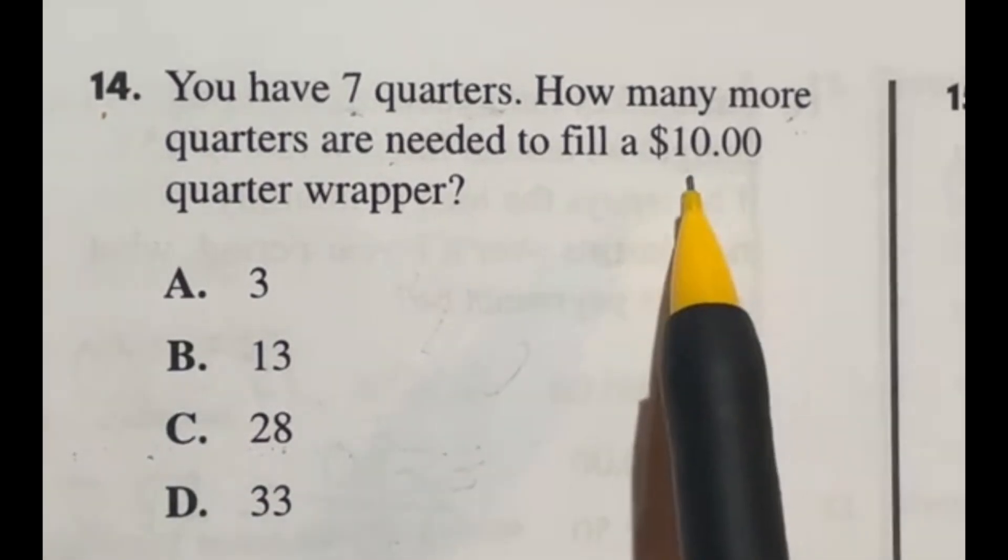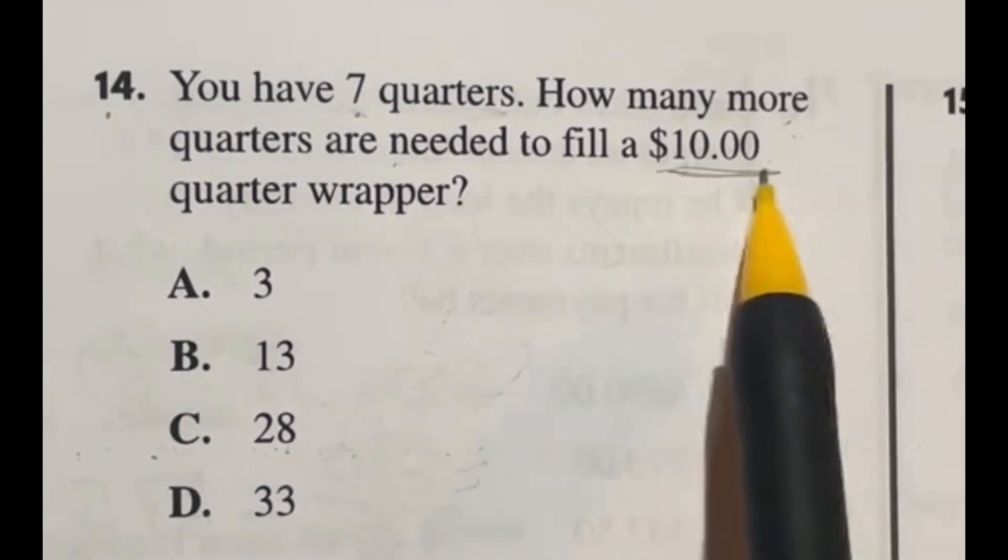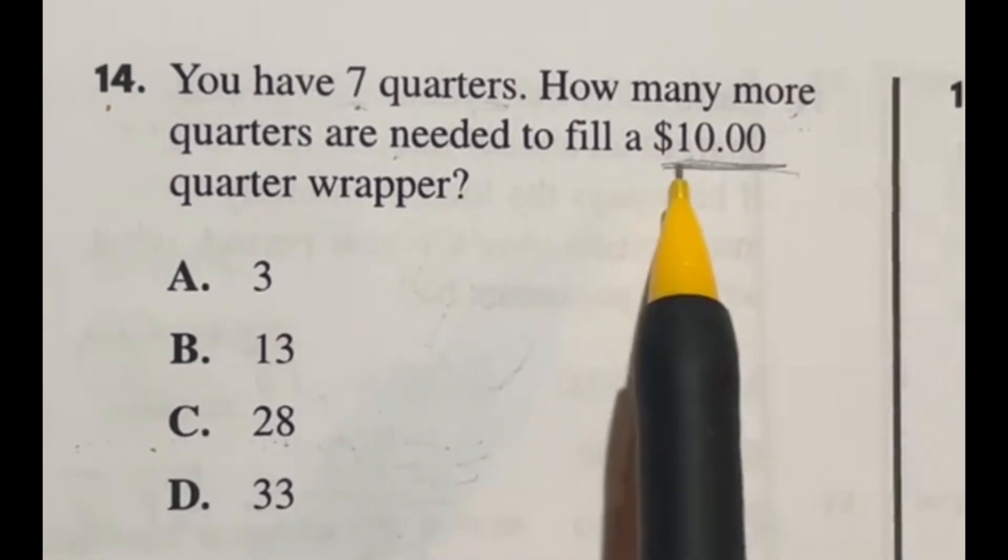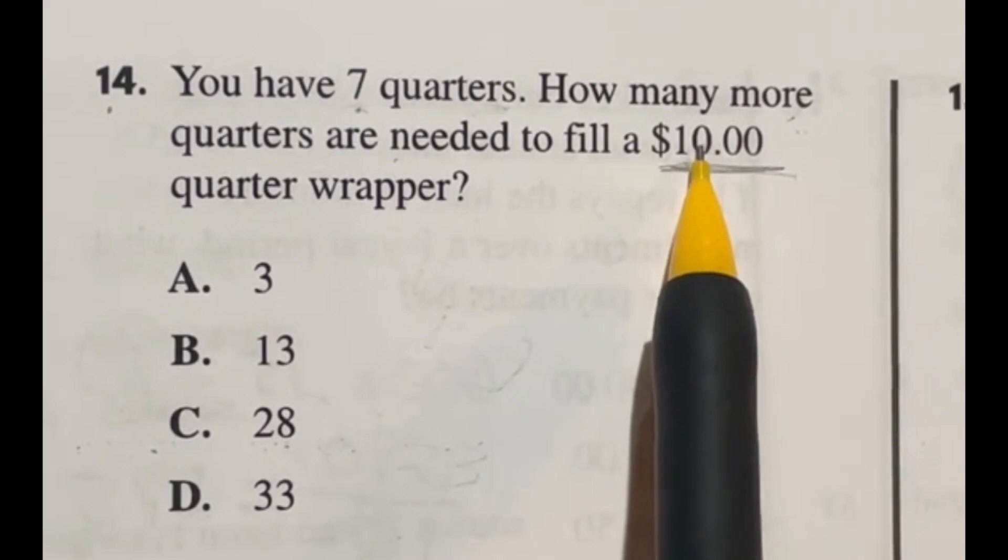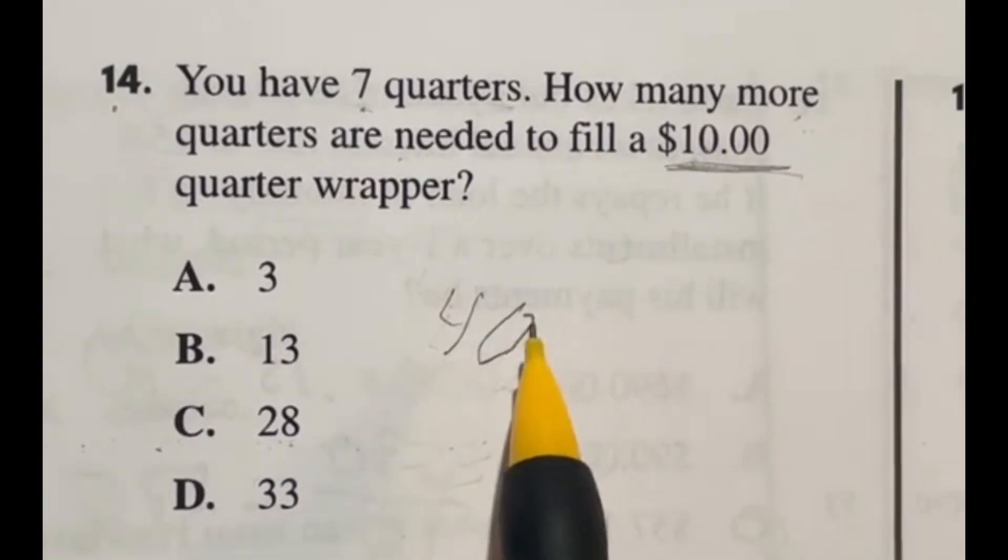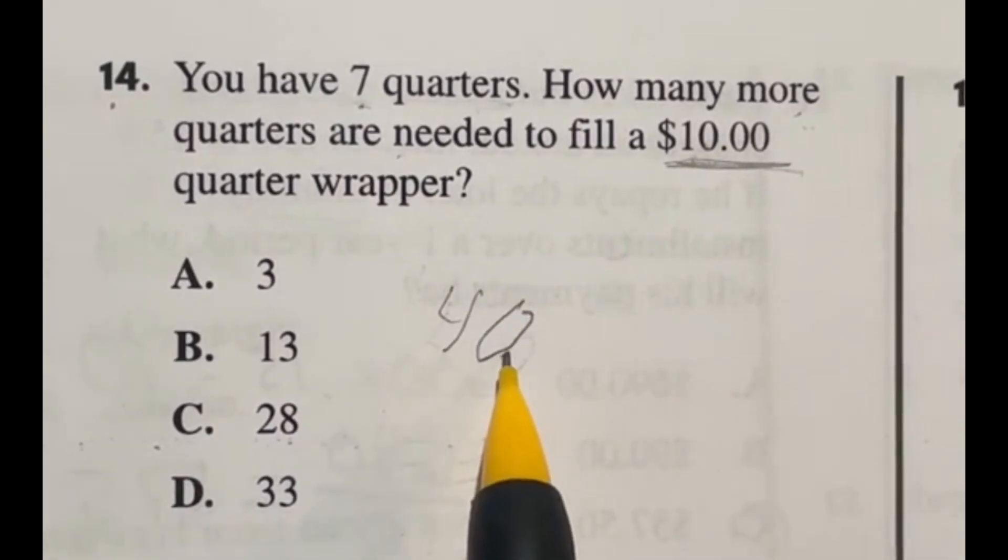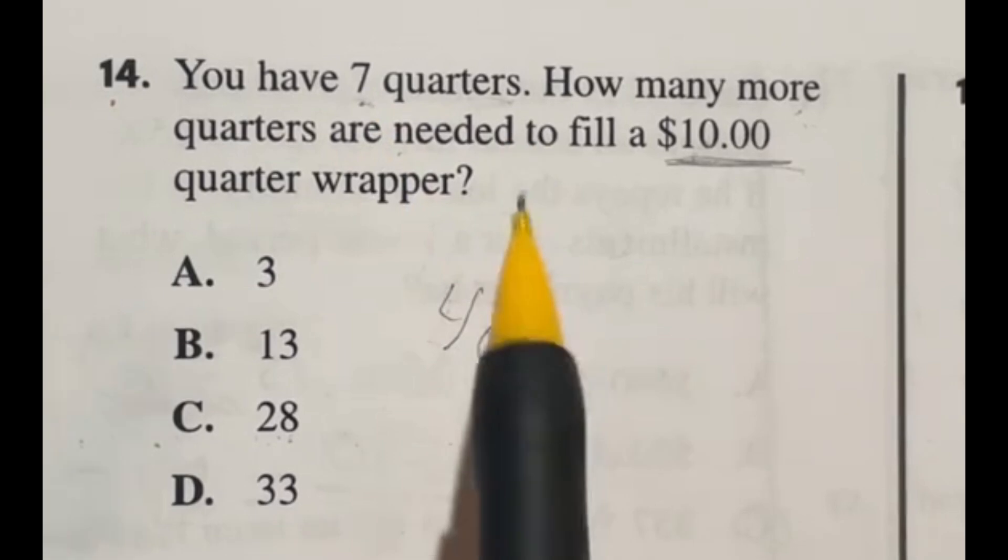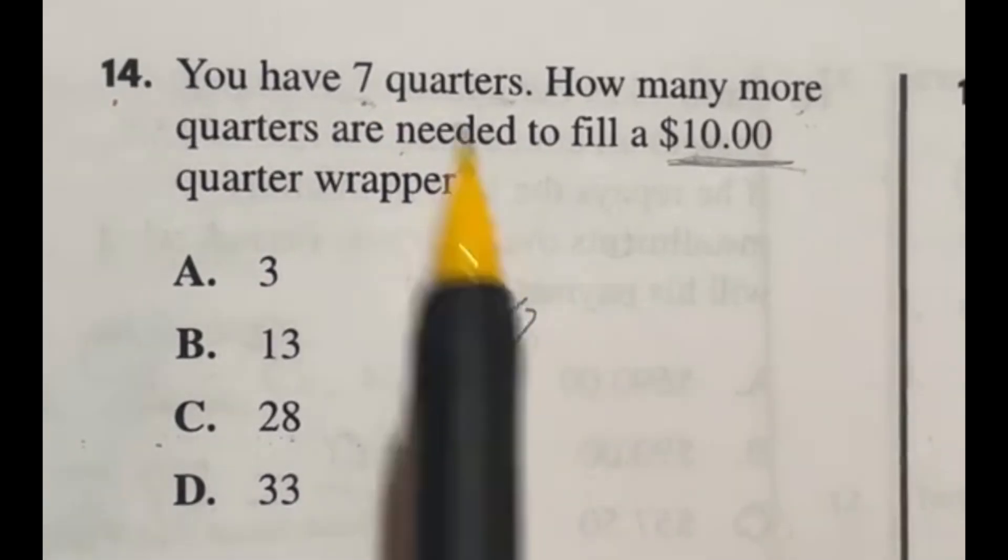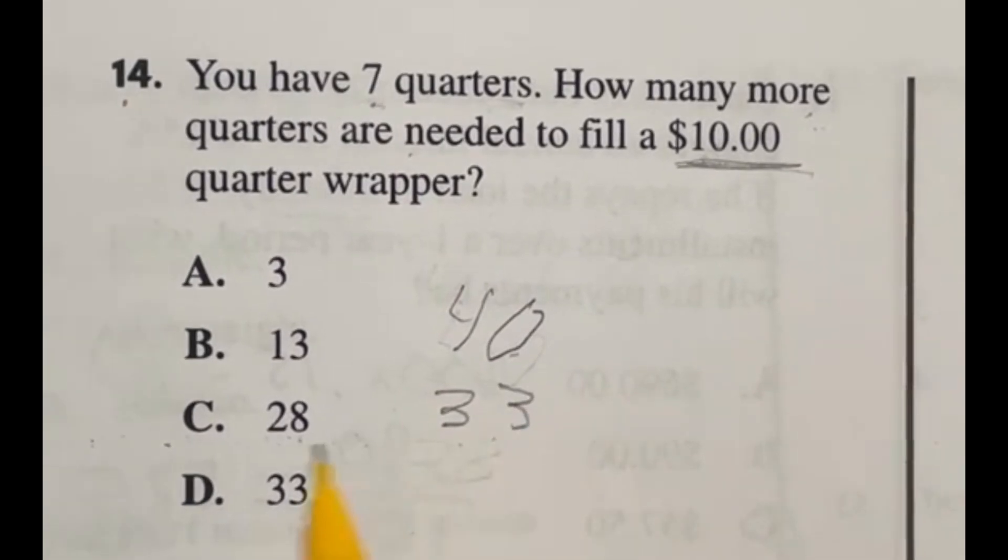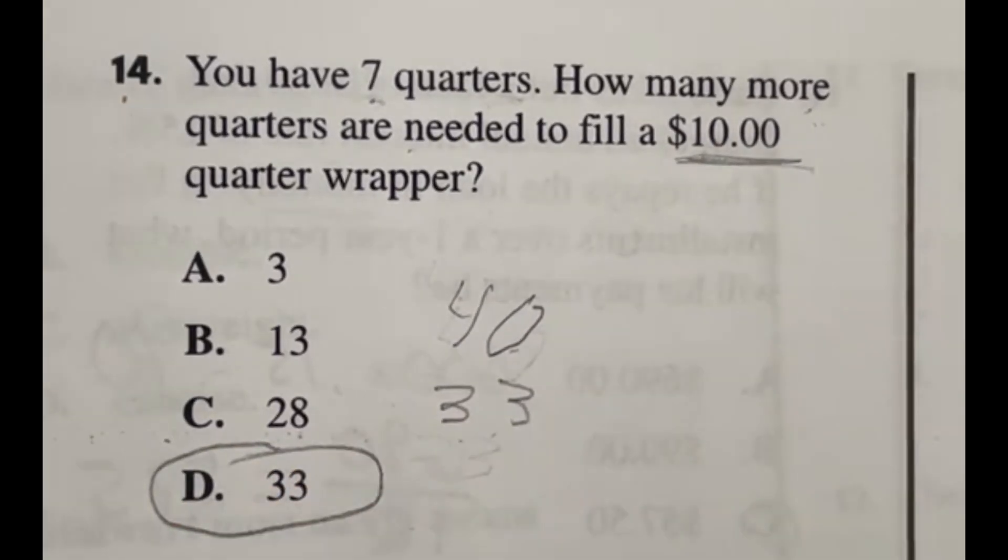Instead let's just look at our end result. We need $10 in quarters. Well how many quarters is that? There's four quarters in a dollar so if I need $10 I would do 10 times 4 to give me 40. Then knowing that I need 40 quarters and I already have seven, I'm just going to subtract those seven quarters off of that 40. So 40 minus 7 gives me 33. If I'm looking through my answers here 33 is answer D and you're finished.